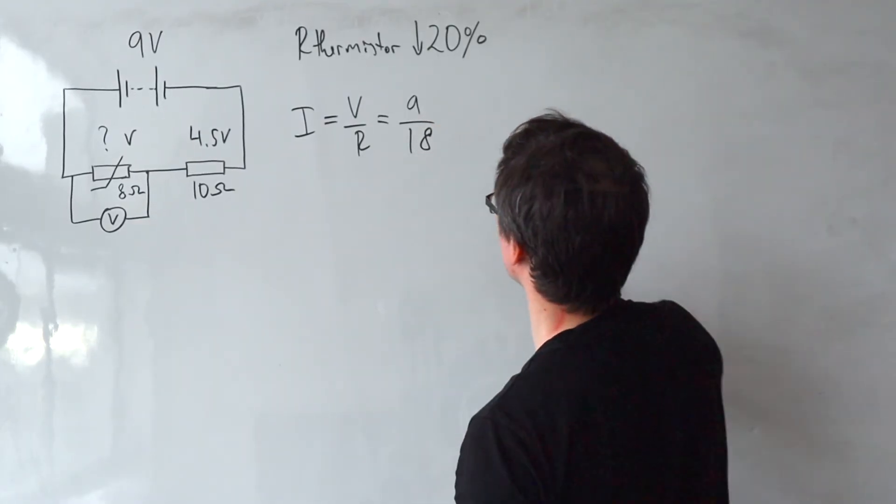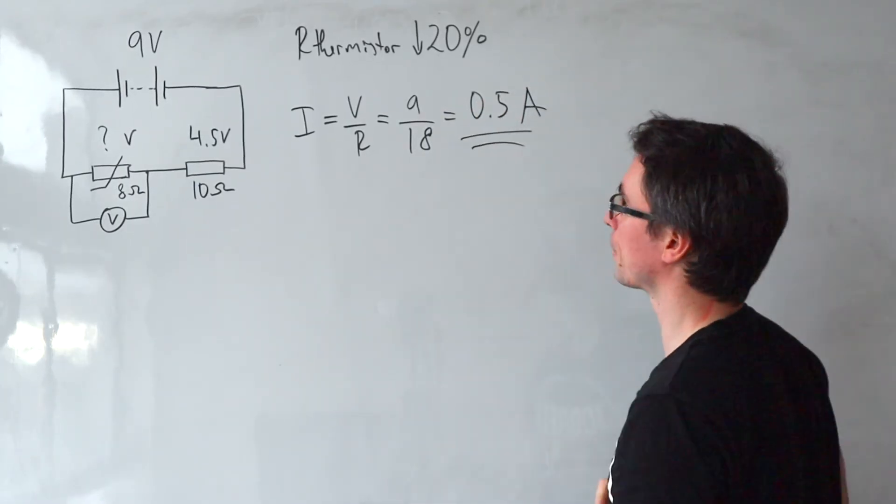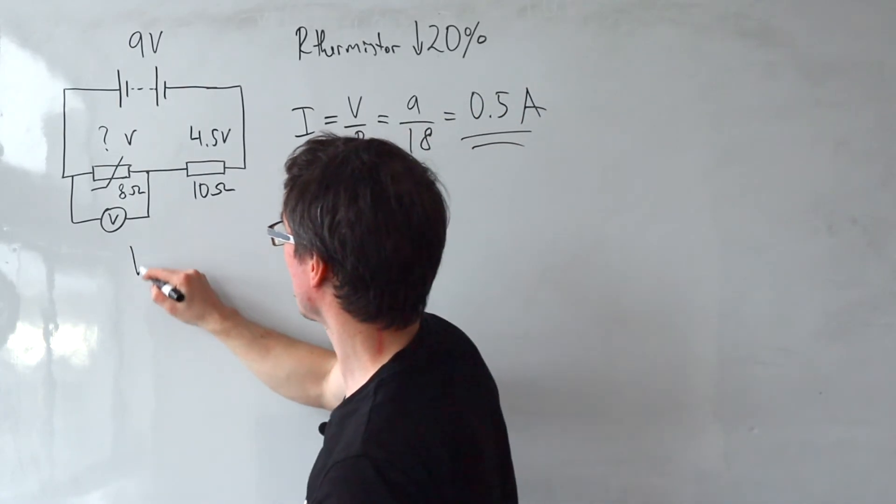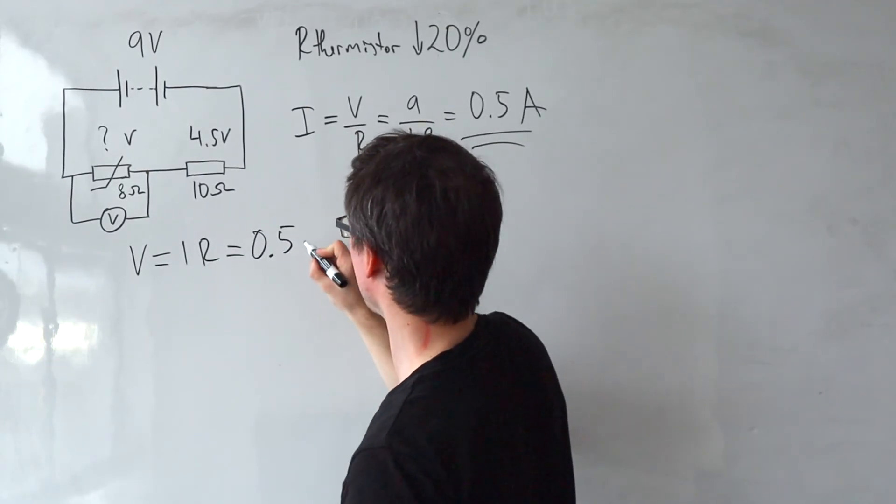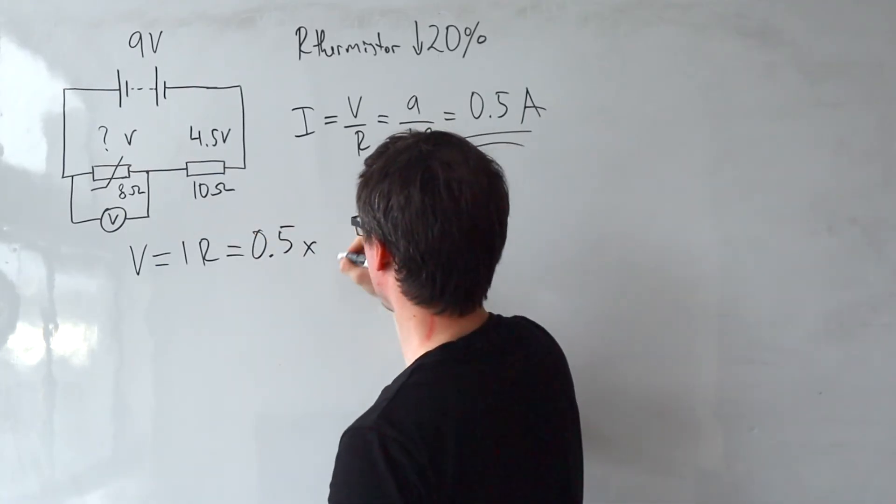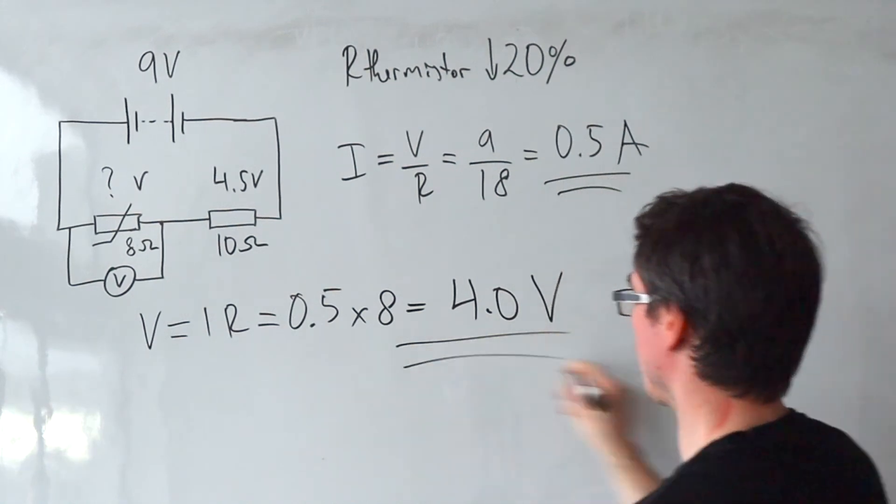So, the current will be 0.5 amps. Okay, then I'll simply apply V is equal to IR. So, that will be 0.5 multiplied by 8, which is going to give me 4.0 volts.